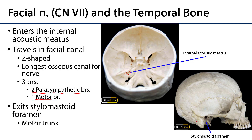Here we can see a lateral view of the skull. This is the mastoid process of the temporal. This is the styloid process of the temporal. Nestled between the two is the stylomastoid foramen. We can also see the external acoustic meatus there. Coming through that stylomastoid foramen is going to be the motor trunk for the facial nerve.